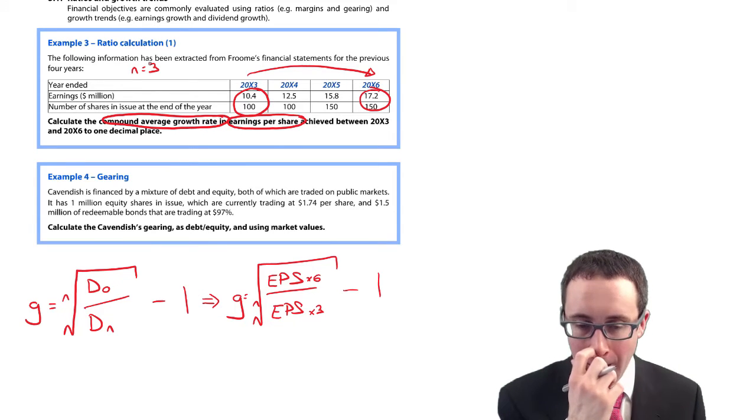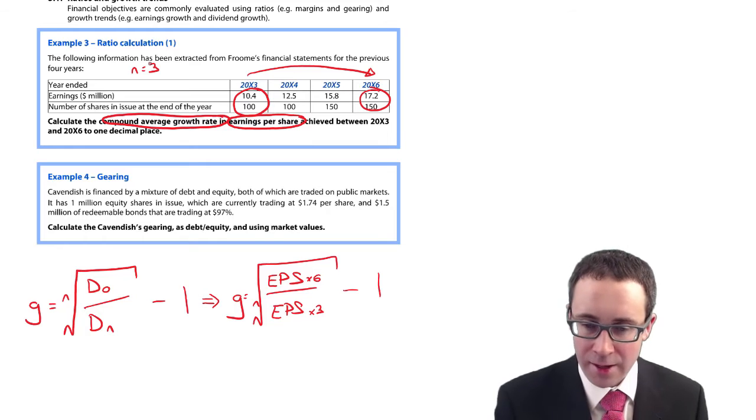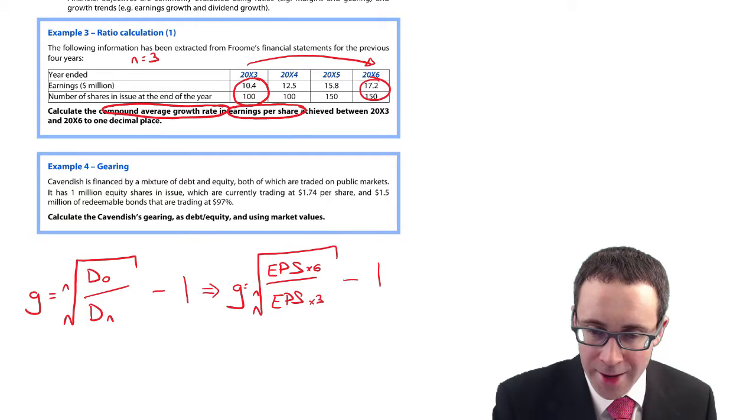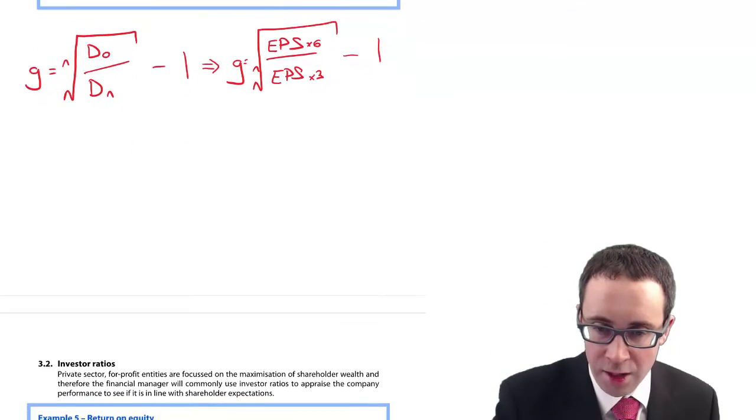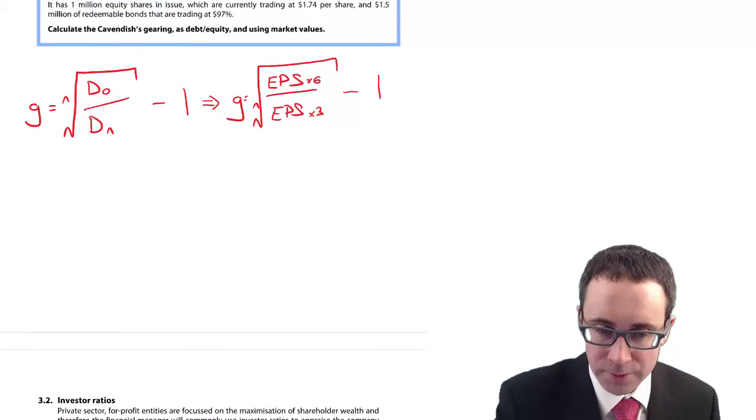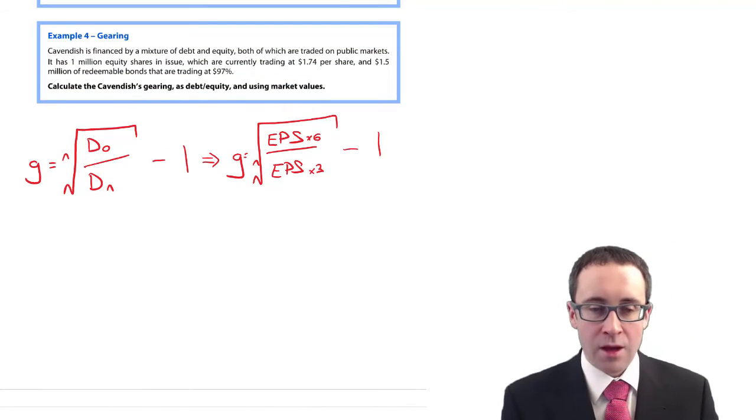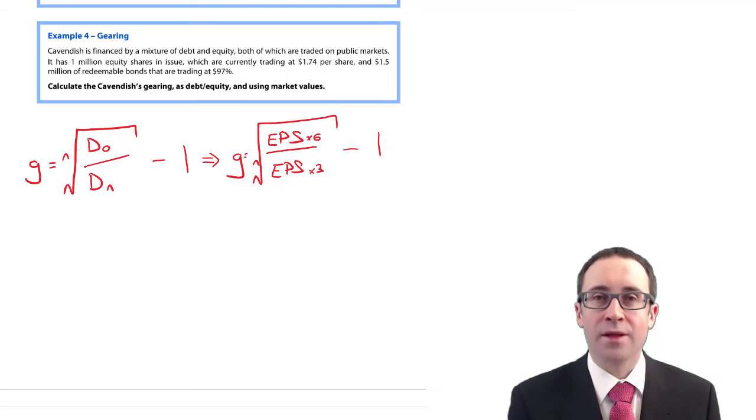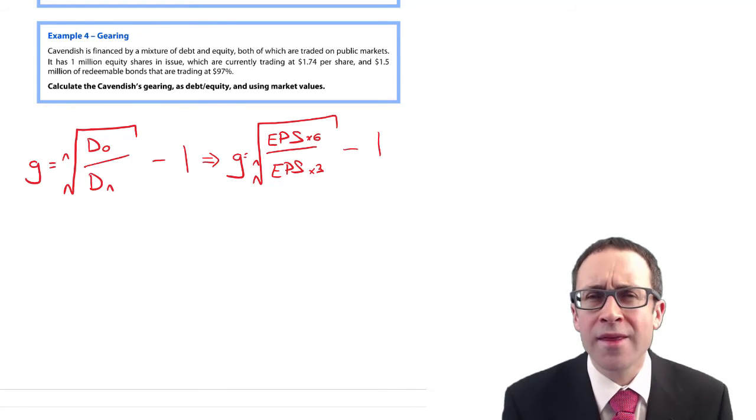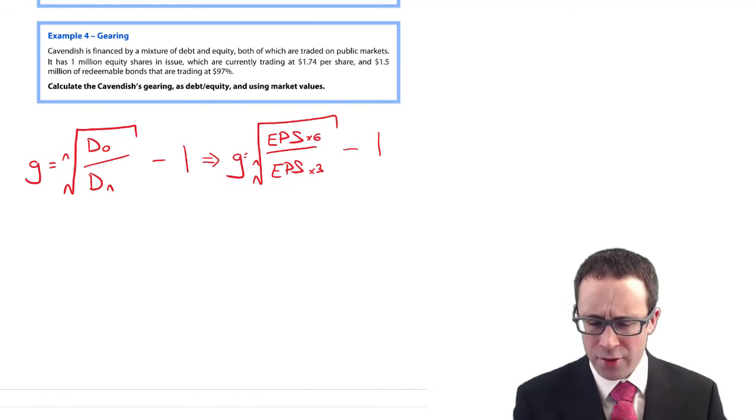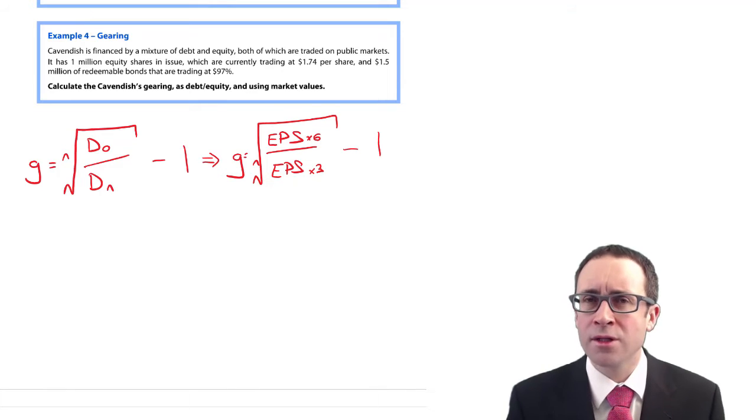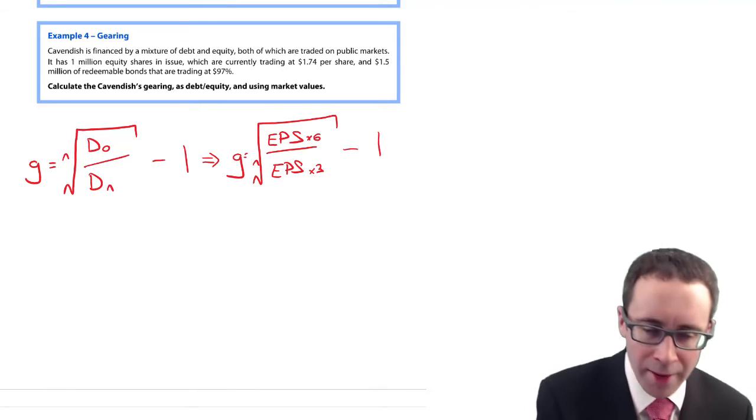Hopefully you'll have a go at that. The answer is about 3.3% if memory serves me right - your average compound growth.